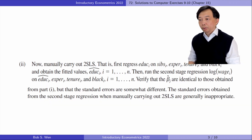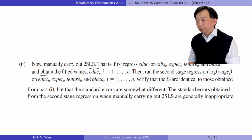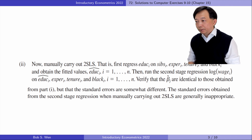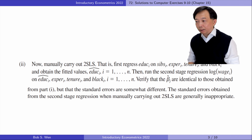In part 2, we manually carry out two-stage least squares. That is, run the first stage regression of education on siblings, experience, tenure, and black, and obtain the fitted values, education hat. Then run the second stage regression of log wage on education hat, experience, tenure, and black. Verify that the beta hats are identical to those obtained from part 1, but that the standard errors are somewhat different.